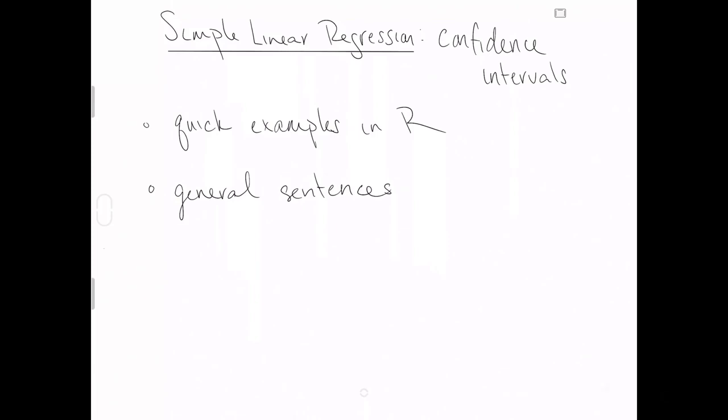In this series on simple linear regression, we're now going to talk about confidence intervals. We'll do some quick examples in R because the interpretations of confidence intervals can get a little tricky. I think it'll be helpful to start with a particular example, and then I'll come back to the whiteboard and write out general sentences. After seeing a particular example, I think will be particularly helpful.